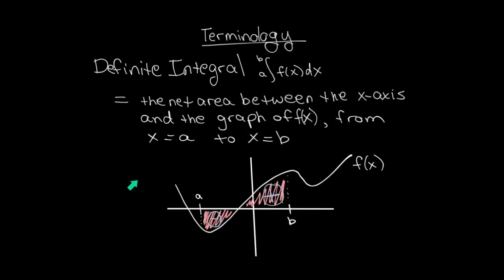Not forgetting to add plus c. What we're doing today is an entirely different process. We are drawing functions, shading in regions, figuring out positive area and negative area, and adding it up. The key indicator that you're supposed to be drawing a graph and thinking about areas is that there's a number on the bottom of the integral sign and a number on the top of the integral sign. As we move along in this course, we'll start to understand better why such similar symbols are used for two totally different ideas.